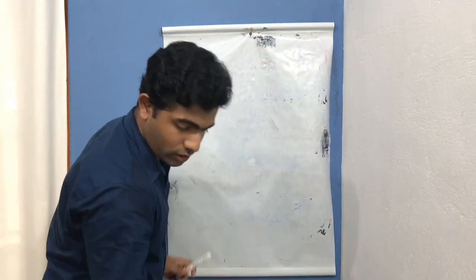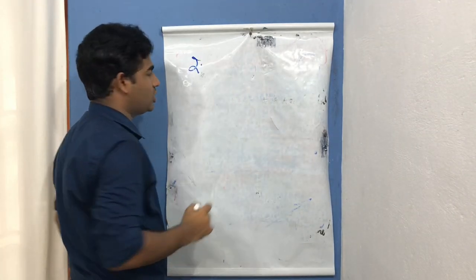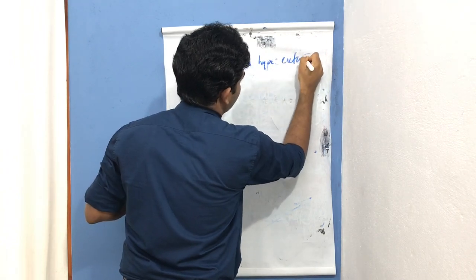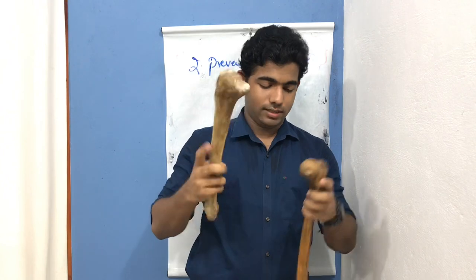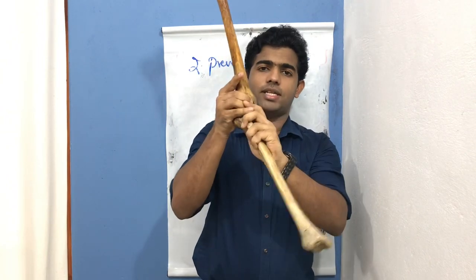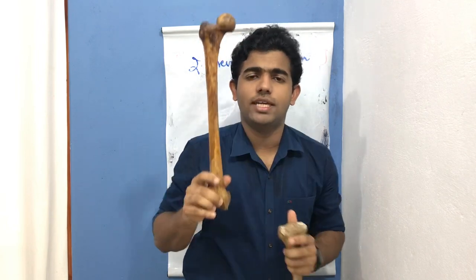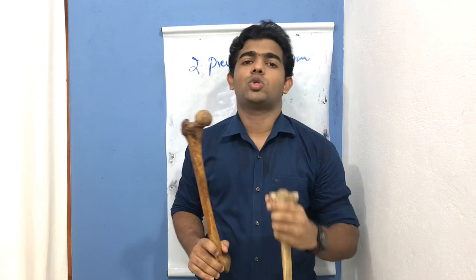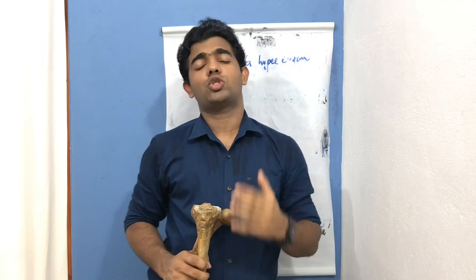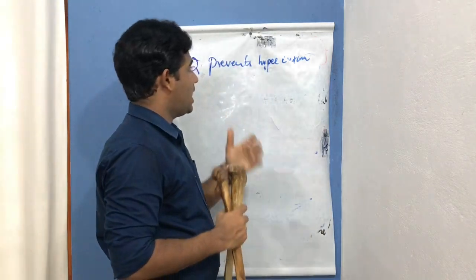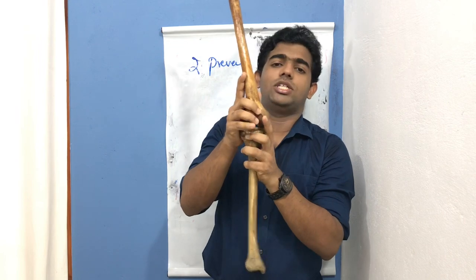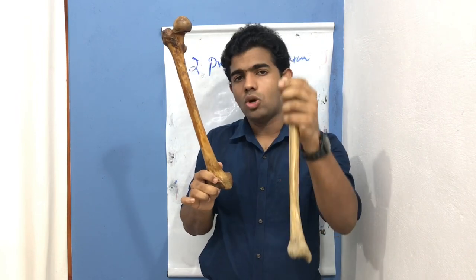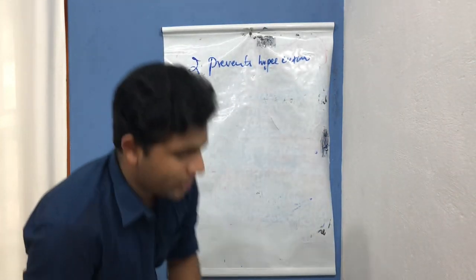The second function of the ACL is that it prevents hyperextension. The anteromedial bundle and posterolateral bundle are tight during extension, so when the knee goes for a greater degree of extension — hyperextension, as seen in genu recurvatum — this is restricted by your posterolateral bundle of the anterior cruciate ligament. Hyperextension, which is also an anterior translation movement, is prevented by the anterior cruciate ligament, specifically the posterolateral bundle.